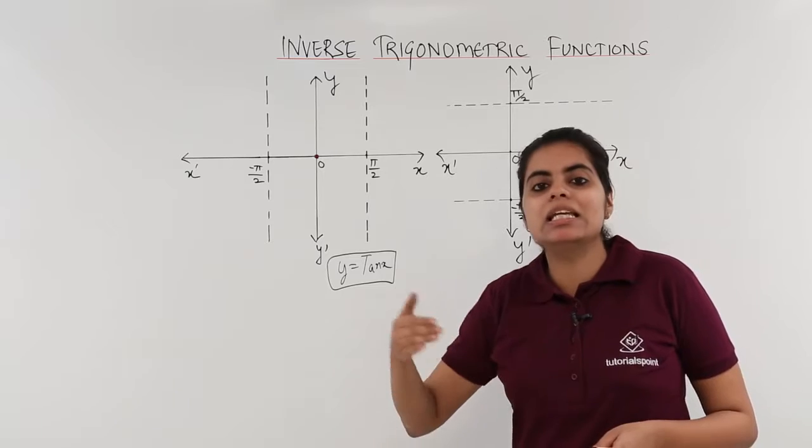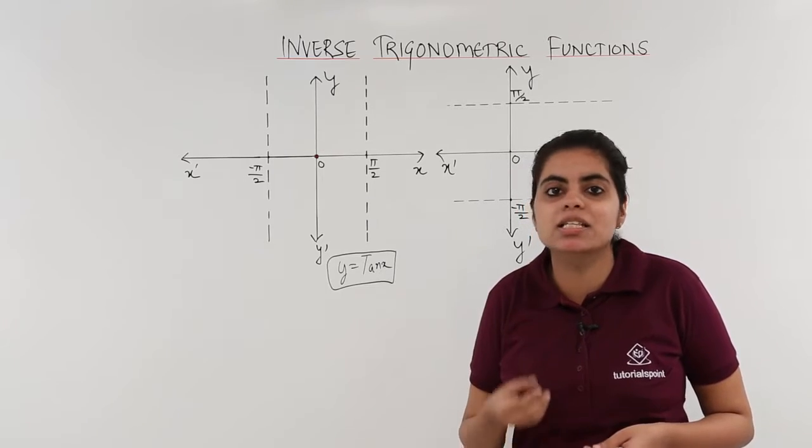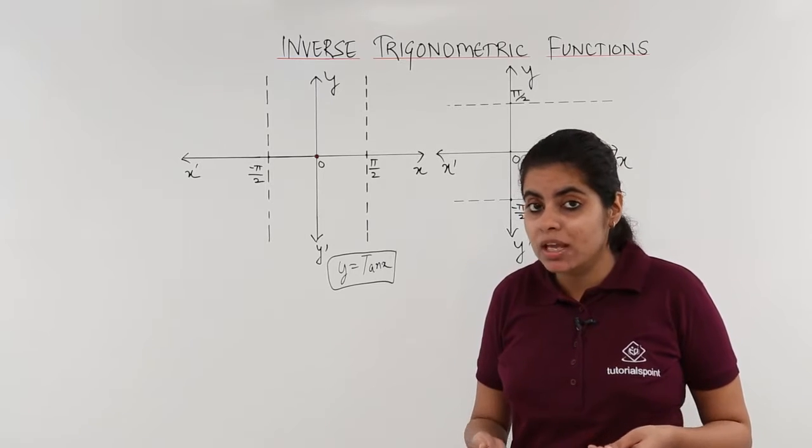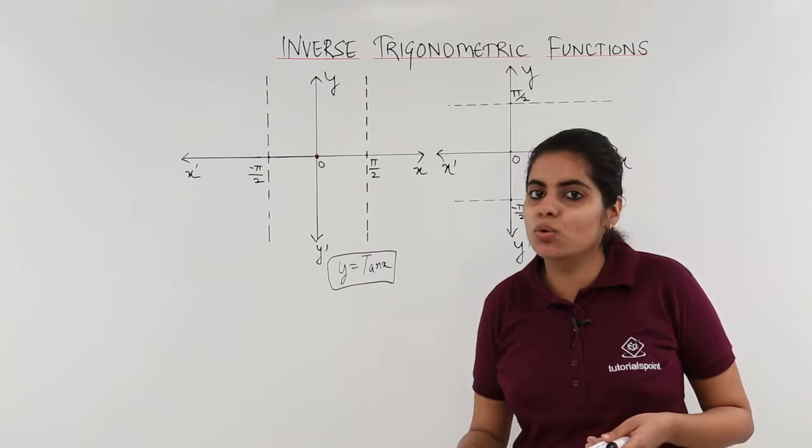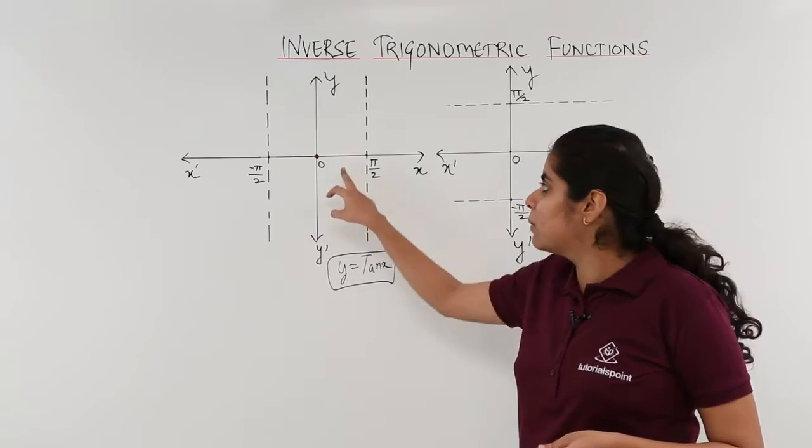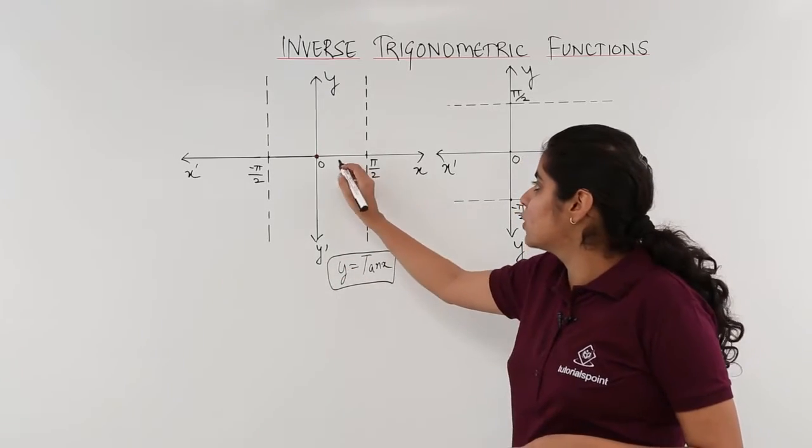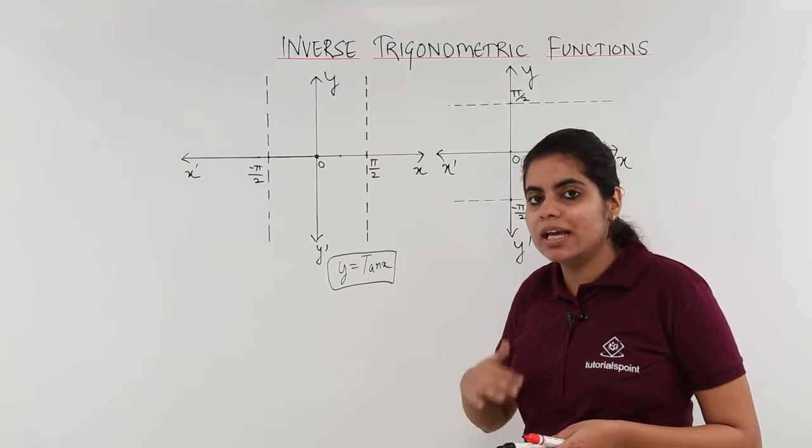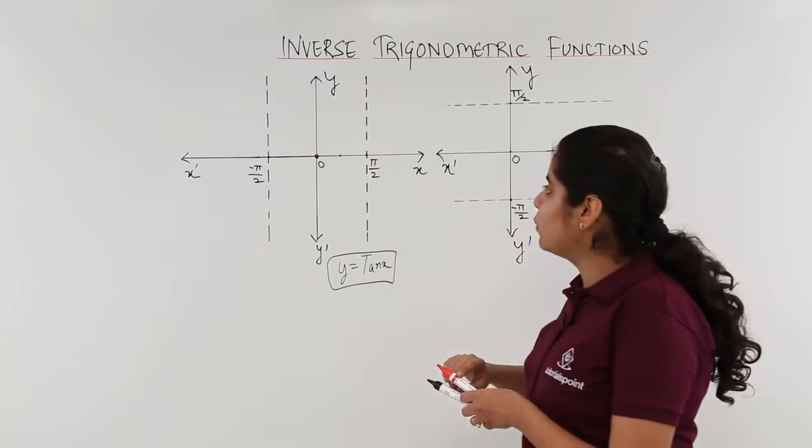What about the other values? The other values will be increasing because tan 30 degrees is 1 by root 3. Tan 45 degrees is 1. Next values tan 60 degrees is also known to us, that is root 3. So by the rough idea that tan pi by 4 will come here, I can just write it here also. Tan pi by 4 will come here. It will be 1 and so on. I can just draw the graph and go about doing the same.